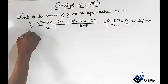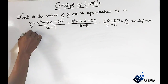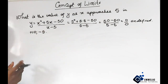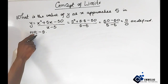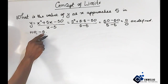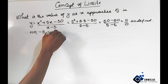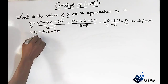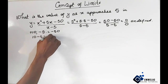We should have positive 10 and negative 5, because when we multiply 10 times negative 5 it will give us negative 50, and when we add the two together it will give us positive 5.